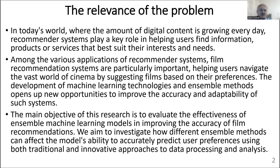Algorithms such as Random Forest, AdaBoost, HGBoost, LightGBM, CatBoost, and Gradient Boosting Machine have demonstrated high performance in classification and regression tasks, making them additional tools for developing advanced recommendation systems. The main objective of this research is to evaluate the effectiveness of some machine learning models in improving the accuracy of film recommendations, investigating how different models can affect the ability to accurately predict users' preferences.